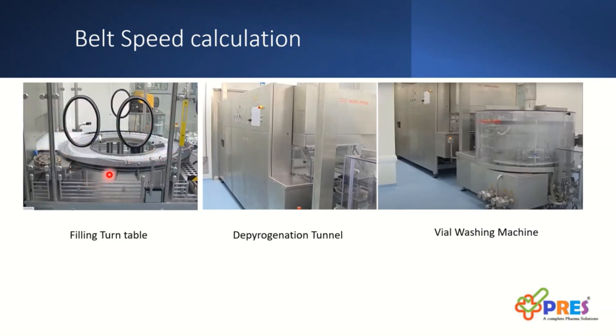Similarly, for any kind of stoppages of the washing machine and tunnel, these vials will help to continue the filling operations until the washing stations or tunnel being rectified. It's a bigger opportunity to run the filling machine at higher speed.